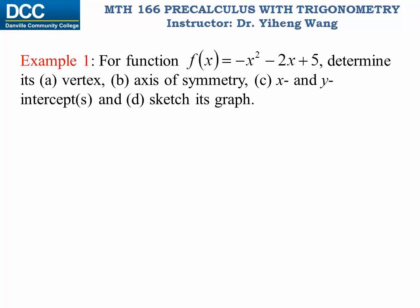Let's look at an example. For the quadratic function f(x) = −x² − 2x + 5 given in general form, we need to determine: (a) its vertex, (b) the axis of symmetry, (c) x- and y-intercepts, and (d) sketch its graph. First, comparing to the general form, we identify the coefficients: a = −1, b = −2, and c = 5.